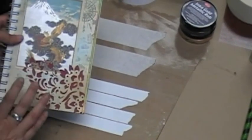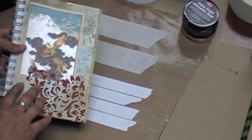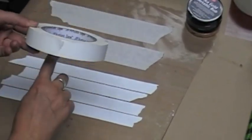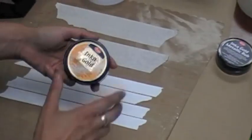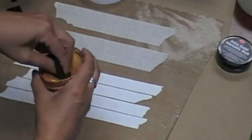We're gonna make washi tape for my art journal. I decided to choose artist tape and lay it down on my craft mat. We'll use some Inca gold and just use a sponge.